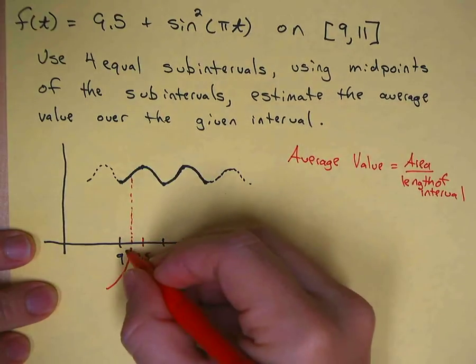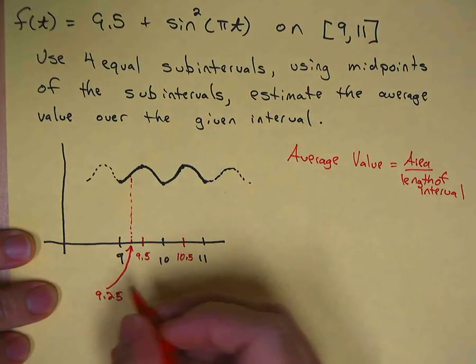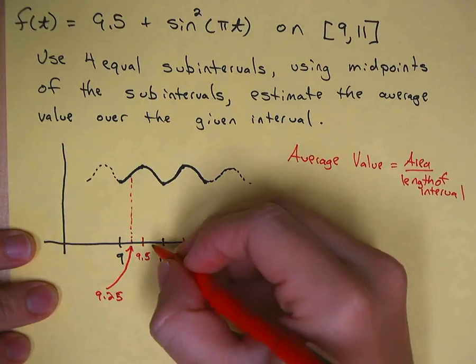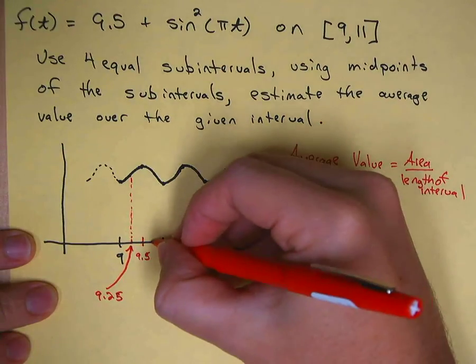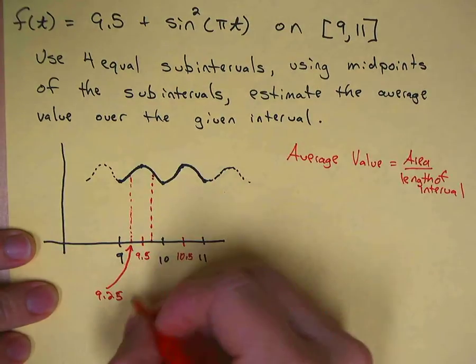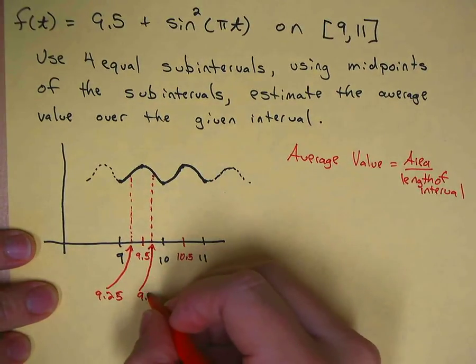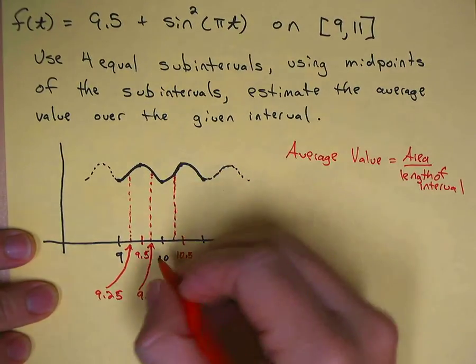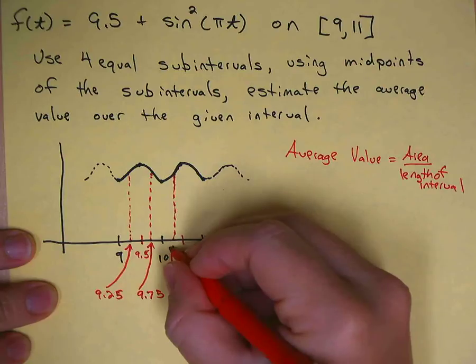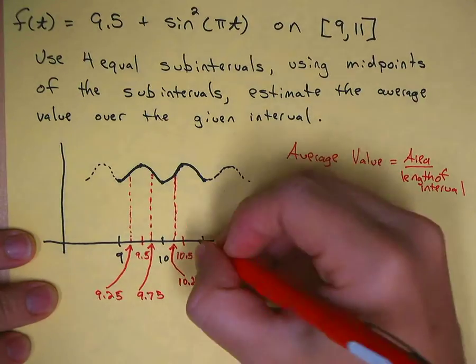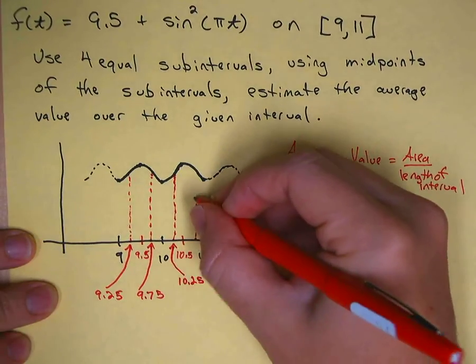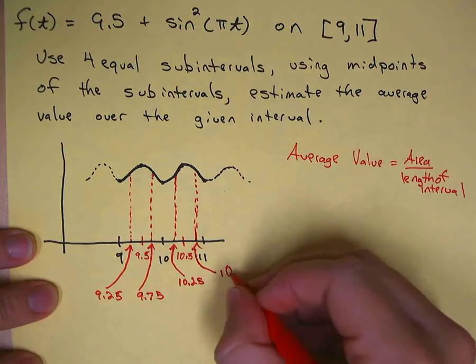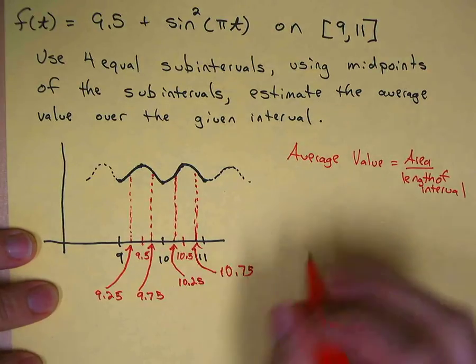Our next one will be in between here, which would be 9.75. The next one would be here, which is 10.25, and then the final one would be here, which is 10.75.